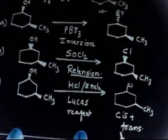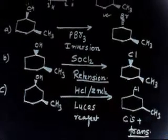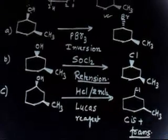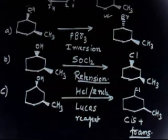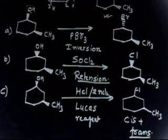Both products are obtained in this case because the carbocation is the intermediate. Once the carbocation is formed, Cl⁻ is free to attack from the top side or the bottom side. If Cl⁻ attacks from the same side as CH3, you get the cis product; if it attacks from the opposite (bottom) side, you get the trans product.